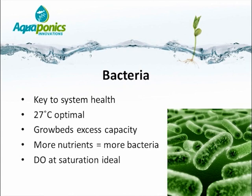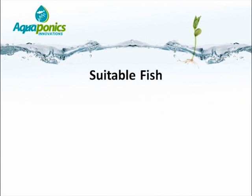People often ask: if bacterial growth is optimal at 27 degrees Celsius, does that mean bacteria are ineffective in a trout system? No, but they are less effective. When designing systems for trout aquaponics, the biofilter ratio needs to be much higher than for fish such as tilapia or catfish, where the optimal temperature is almost identical to the optimal temperature for bacteria.